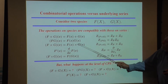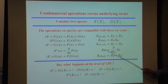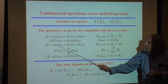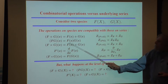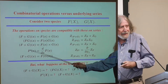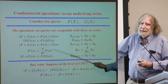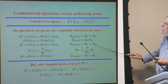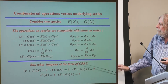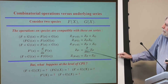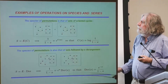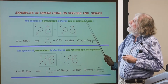If you take the Cartesian product of two species and compute the series, it is the Hadamard product of the two series. The series associated with the derivative of the species is the derivative of the formal power series, with analogous operations for the CPS. Permutations are sets of oriented cycles — everybody knows that. So the species of permutations is that of sets into which you put cycles. You get for free that the series of permutations is 1 over (1 minus x), since the series of sets is the exponential.